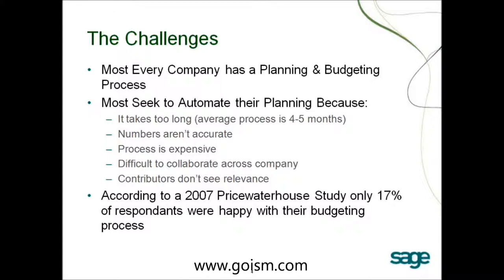If everybody's budget is unique, how do you design a product to assist with budgets? Well, because there is commonality — not in how the budget is designed, but in the challenges. Everybody has a need to automate their budget process because most budget processes take too long. According to CFO magazine, the average process is four to five months. That's a long time — especially in this day and age where things are changing rapidly. By the time you're done, the picture you built it on has already changed dramatically.